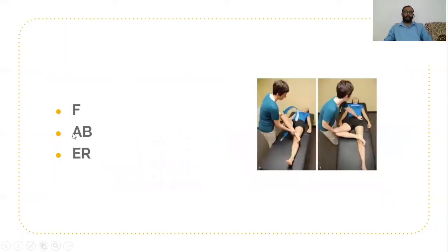FABER stands for flexion, abduction, and external rotation. This FABER test is also known as the Patrick test and the figure-of-four test. In this test, we perform flexion of the hip, abduction of the hip, and then external rotation, keeping the affected limb in the figure-of-four position, which causes pain over the affected sacroiliac joint.